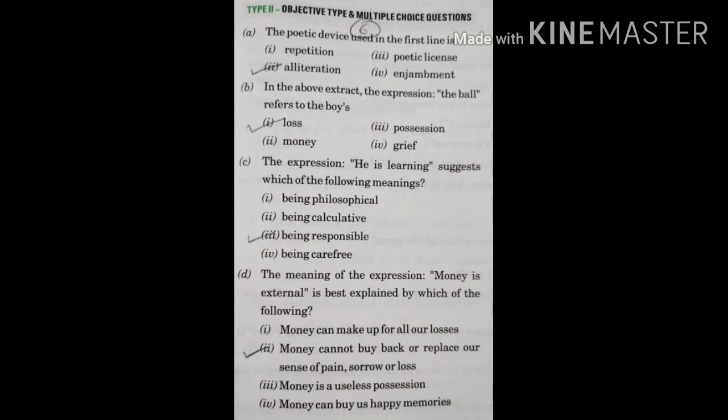In the above extract, the expression 'the ball' refers to the boy's — 'No one buys a ball back' means loss. Options: Loss, Money, Possession, Grief. Loss — the thing that we cannot buy with money is the sense of loss. The expression 'he is learning' suggests — correct option is being responsible. He is learning to be responsible.